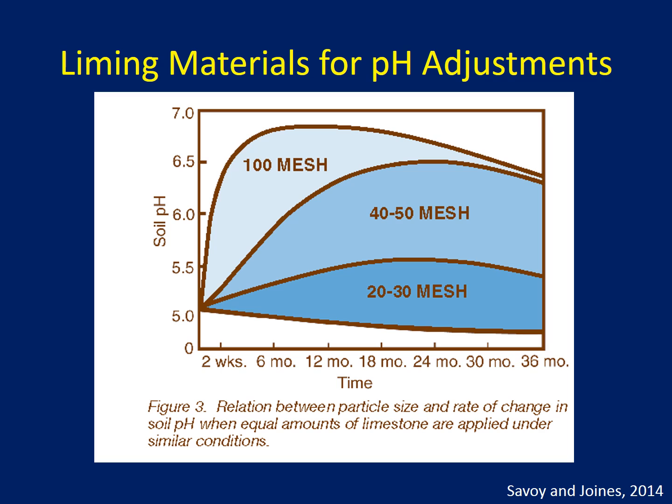In addition to the calcium carbonate equivalent, it's also important to understand the particle size of the material you're applying. Material with smaller particles is going to react a lot faster in the soil. An example is the 100 mesh material on the graph, which represents a small particle size. You can see it reacts and neutralizes the soil within about the first six months after application, changing the pH from about 5 all the way up to maybe 6.8, close to 7. The other materials have larger particle sizes, take a lot longer, and don't produce the same effect.